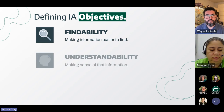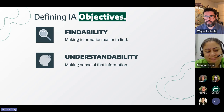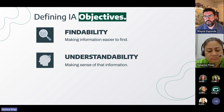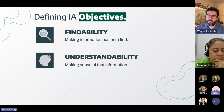Moving on to understandability — making sense of information when provided with both context and its relation to concepts you already understand. For example, a film and TV tracking app might allow you to view series and films by genre or year of release. The key is that you already have a baseline understanding of what genres and release dates are — without this, you won't be able to make sense of it and will be unable to choose logically. Additionally, context matters, as things can be understood differently based on where and how they're encountered.